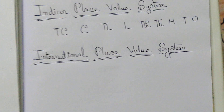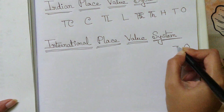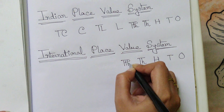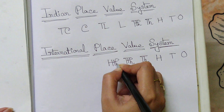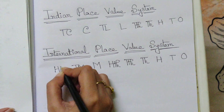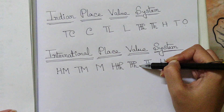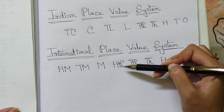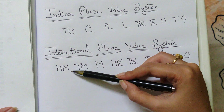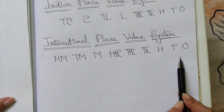The second one is the international place value system. It also starts with ones, tens, hundred, thousand, ten thousand, hundred thousand, million, ten million, hundred million. So you can see ones, tens, hundred, and ten thousand remain the same. Lakh is replaced by hundred thousand, ten lakh by million, crore by ten million, and ten crore by hundred million. This is the difference between the Indian and international place value systems.